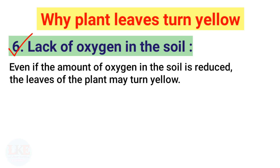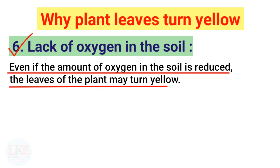Lack of oxygen in the soil — even if the amount of oxygen in the soil is reduced, the leaves of the plant may turn yellow.